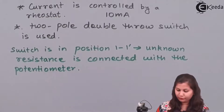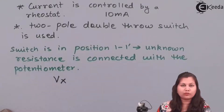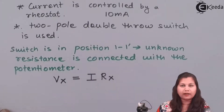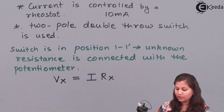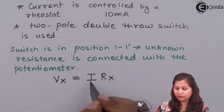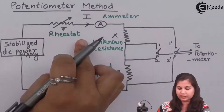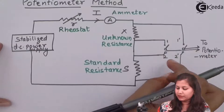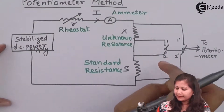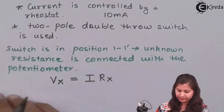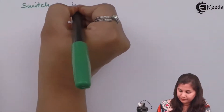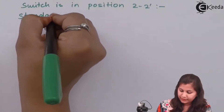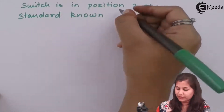If we write the value for the voltage drop, then Vx — the voltage drop across the unknown resistance X — will be equal to I multiplied by the unknown resistance X, because from Ohm's law V equals IR. So V is the voltage drop and I is the current, which we have already set through the rheostat. Now we will not change the setting of the rheostat; the current will be the same. Then the switch will be in position 2-2', so at this position the standard resistance S is connected — S is a known resistance because we already know its value.